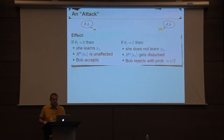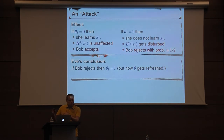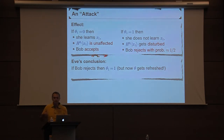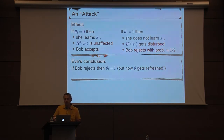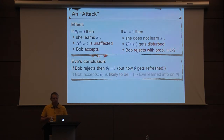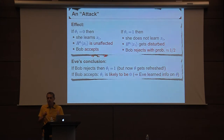From Eve's perspective: if Bob rejects, she knows theta_1 must have been 1 — she's learned one bit of information on the key. The bad news for her is that because Bob has rejected, they now refresh theta. So the one bit of information she just got on theta becomes useless, because they throw away theta and replace it with a fresh choice anyway. However, if Bob accepts, then theta_1 can still be both 0 or 1, but it's somewhat biased — more likely to be 0. So here Eve has learned some information on the key, roughly a constant fraction of a bit, but now this key is going to be reused.